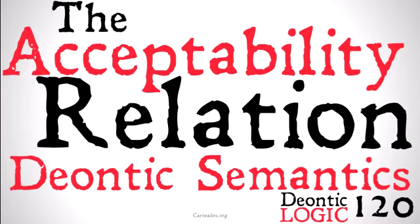Before we get into this relation, I want to talk a little bit about the shift we're making. So far we've just been talking about the axioms, the syntax, the deductive system of deontic logic. We haven't been talking about the official semantics — what it officially means for a particular proposition to be obligatory or permissible or all these other things. What we're going to do is use our modal logic structure, the idea of possible worlds, to define very specifically what the meanings of each of these different predicates are.